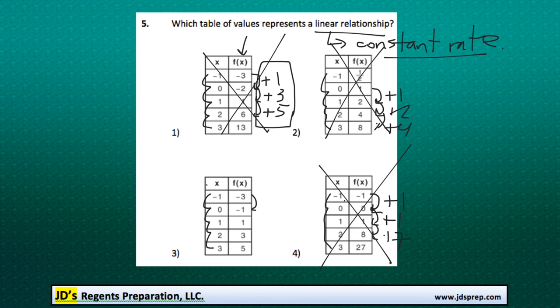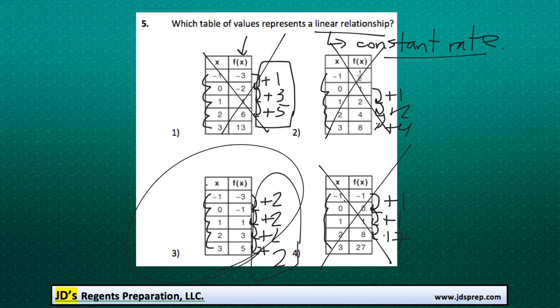We can confirm this is correct. To see that -3 to -1 is an increase of 2. -1 to 1 is also an increase of 2, 1 to 3, and 3 to 5 are all increases of 2. So 3 is the correct table of values. That is a linear relationship.